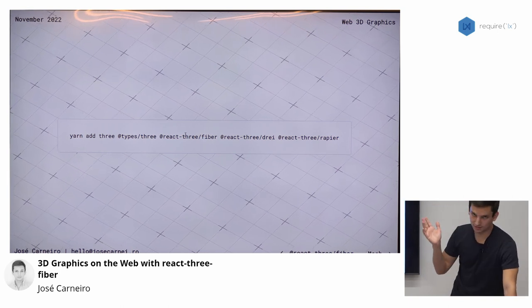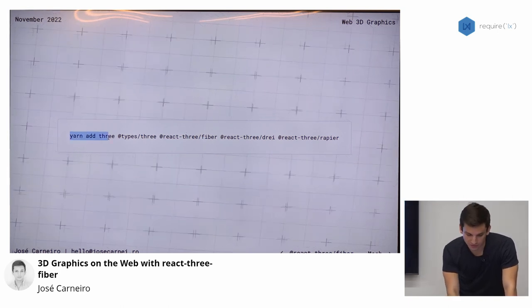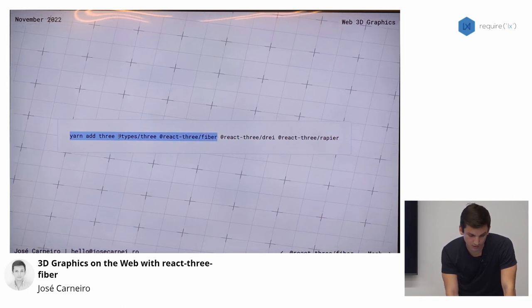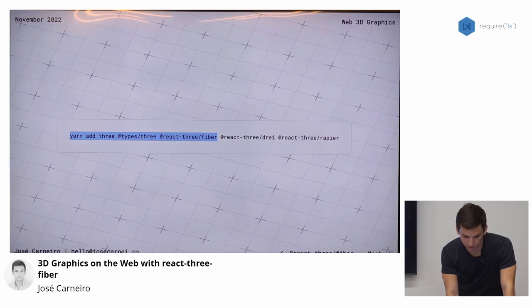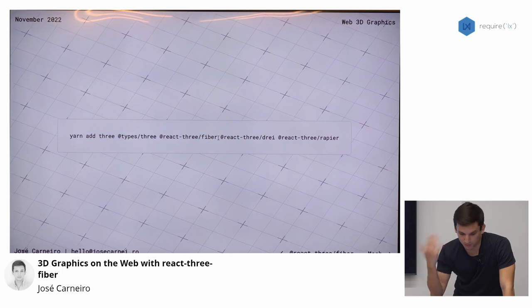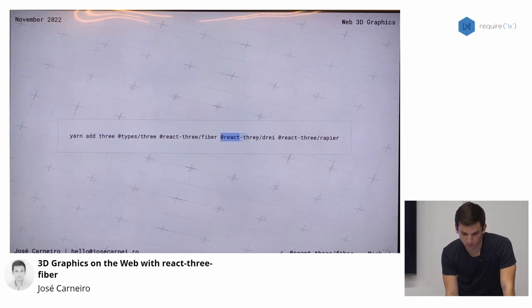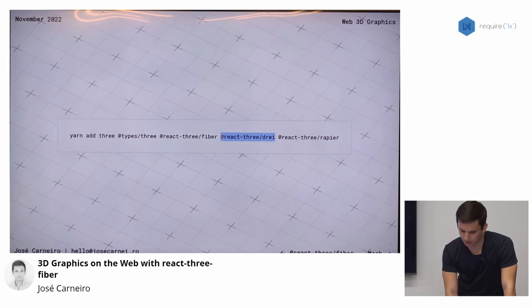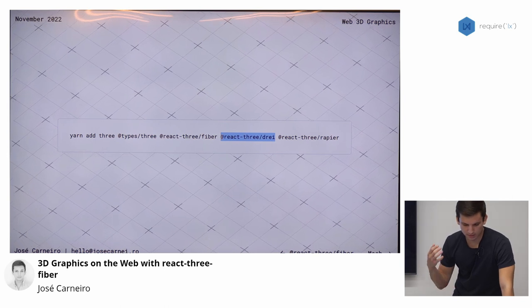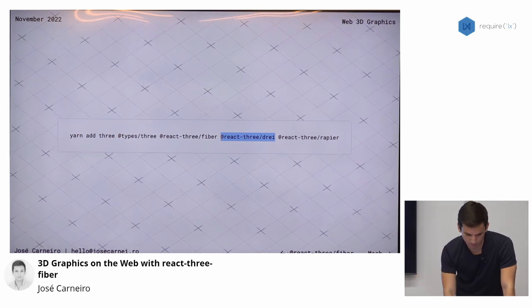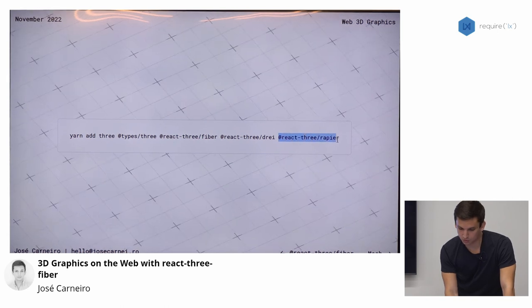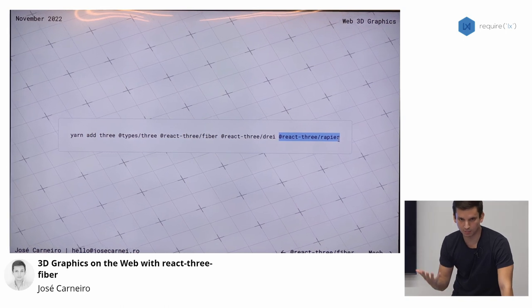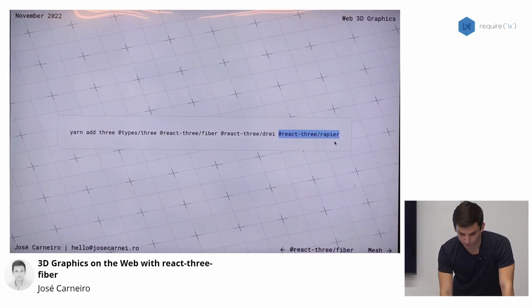Let me show you what you need to do to get started with React 3 fiber. So it's as easy as installing a few dependencies. You don't need all of these dependencies. So adding 3.js, React 3 fiber, and then optionally types slash 3 if you are using TypeScript is enough to get started. But if you want to build extra cool stuff, which we do, you can also consider adding React 3 Dray, which is a standalone library that provides a bunch of utilities that are built on top of React 3 fiber, which are going to be very useful for us. And React 3 Rapier, which allows you to have a physics engine in your application. We're going to be using this one as well.